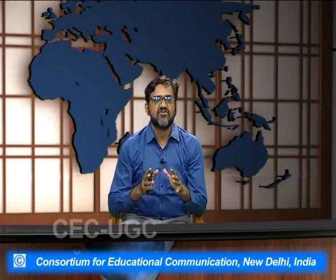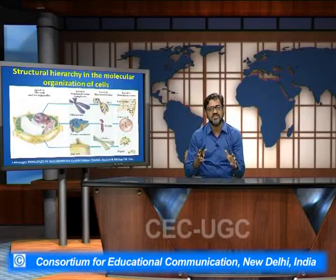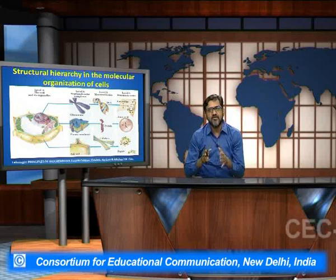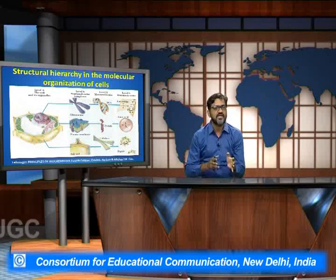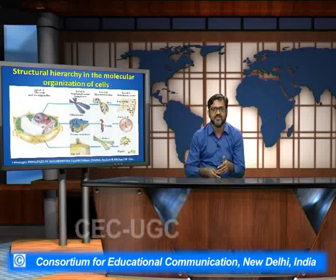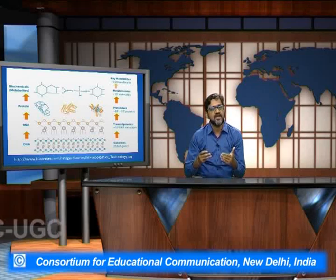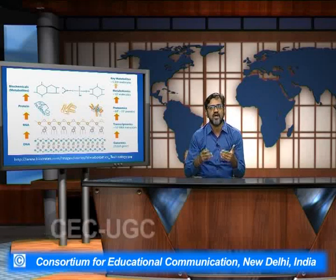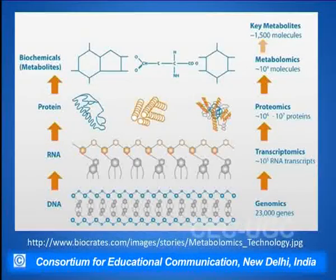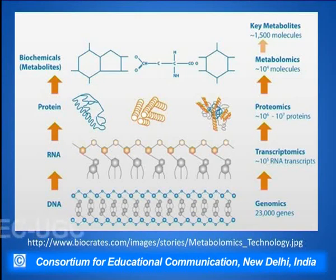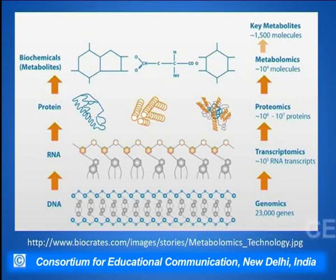This is how a cell is composed of the various structural hierarchy, starting from the macromolecular level to the cellular level, which includes the organelles and cell functioning. A DNA transcribes into an RNA molecule and from the RNA molecule it gets translated to the protein molecule. These protein molecules form many of the biochemicals or metabolites which function in a very important role in signal transduction.